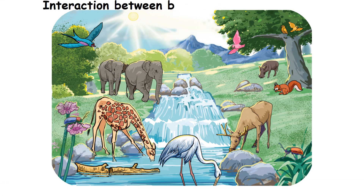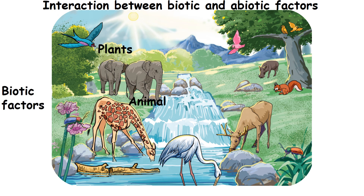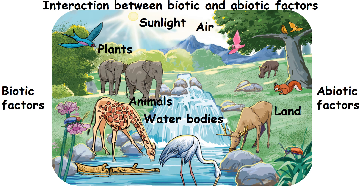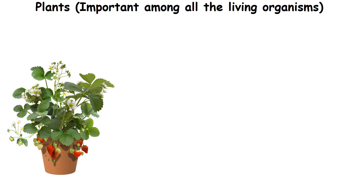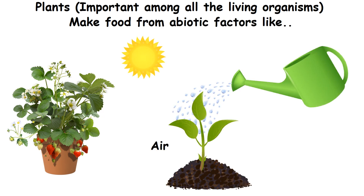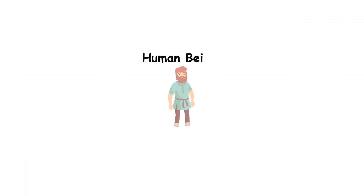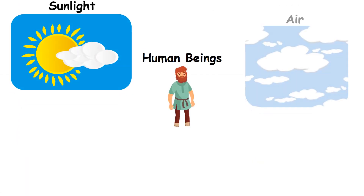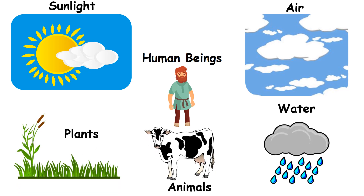All biotic factors depend upon abiotic factors for their living. Biotic and abiotic factors are linked to each other by the flow of energy through food. Plants are the most important among all living organisms because they alone can make food from abiotic factors like air, soil, water, and sunlight. Human beings need sunlight, air, plants, animals, and water to live.